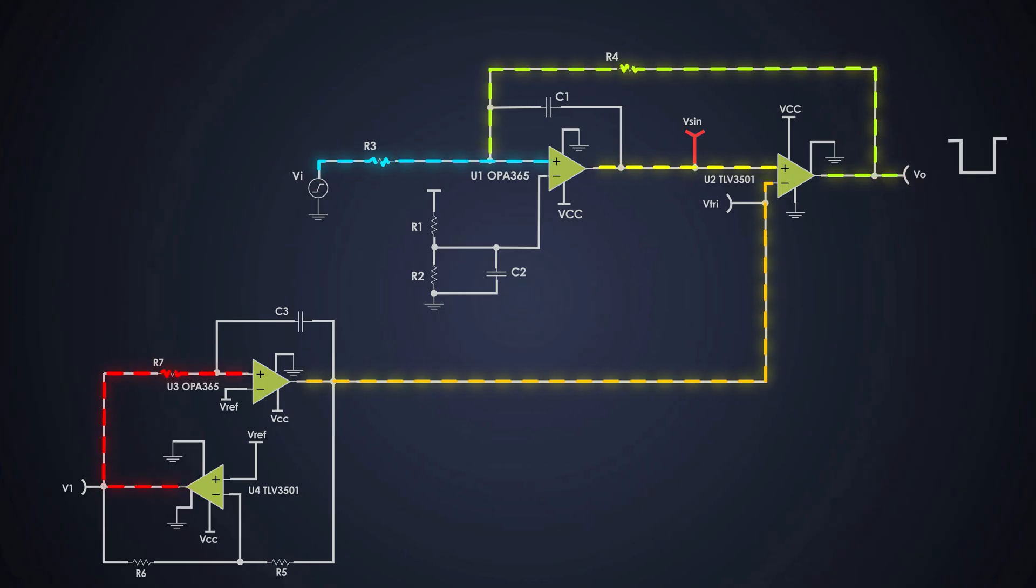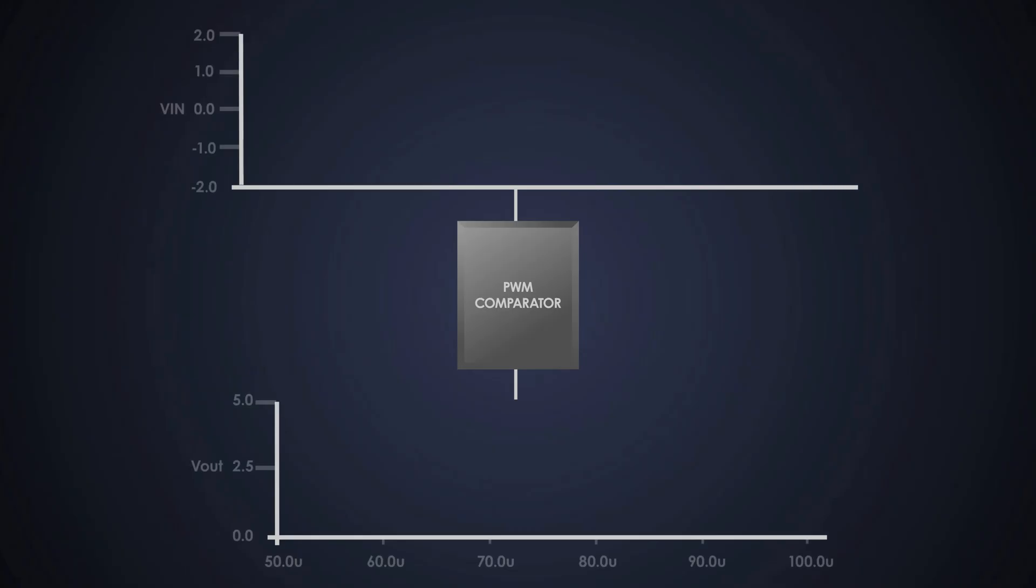This generates a PWM signal whose duty cycle is directly proportional to the value of the input signal. When the analog input is high, the PWM duty cycle increases. When the input is low, the PWM duty cycle decreases.